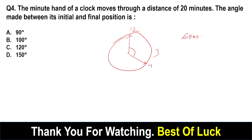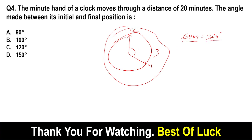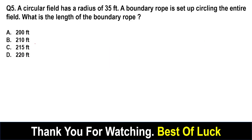In 60 minutes, 360 degrees are covered. This total is 360 degrees — 60 minutes completes 360 degrees. So how many degrees for 20 minutes? 360 divided by 60, into 20. The answer is 120 degrees.